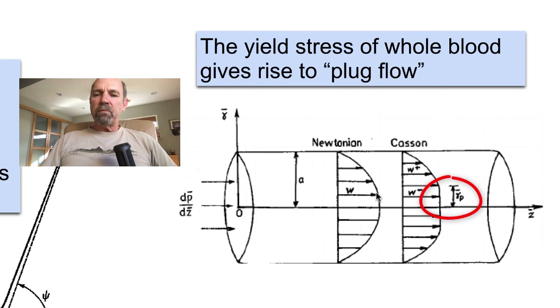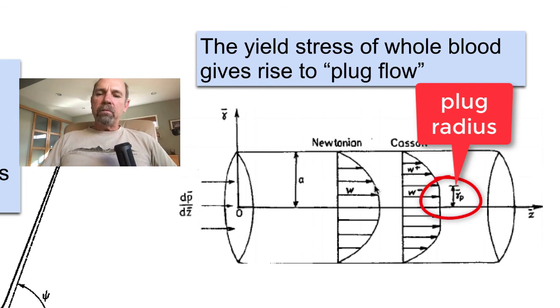Since the shear stress is related to the shear rate, this means that you must go some finite distance away from the center line before the shear stress in the tube flow exceeds the yield stress. Inside that radius, the shear stress would be below the yield stress, and therefore the fluid wouldn't shear. Rather, the velocity would be constant, and this is what's known as plug flow.